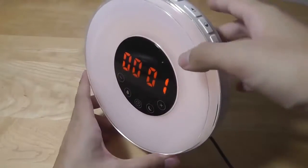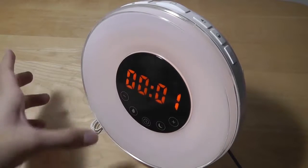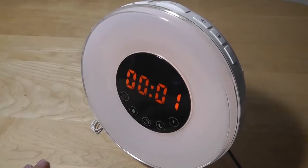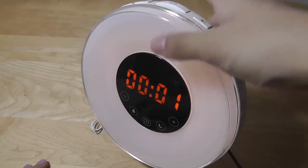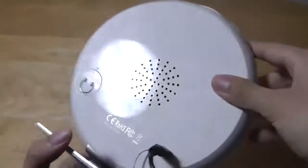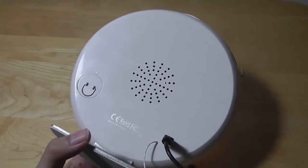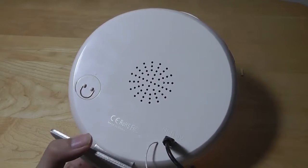That means that when you are unplugged from power, it can still save the time information for a while before you plug in power again. However, unlike the first-generation model, there is no option to plug in standard batteries like AA or AAA batteries to power the entire thing.